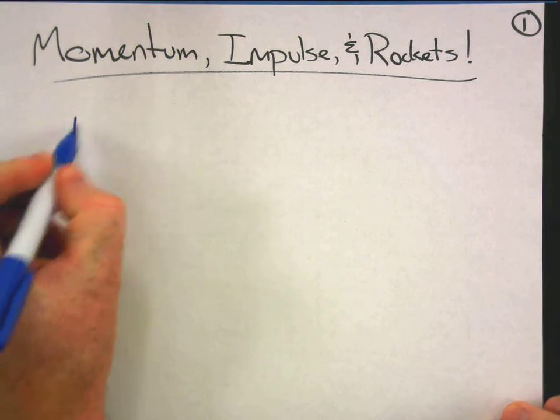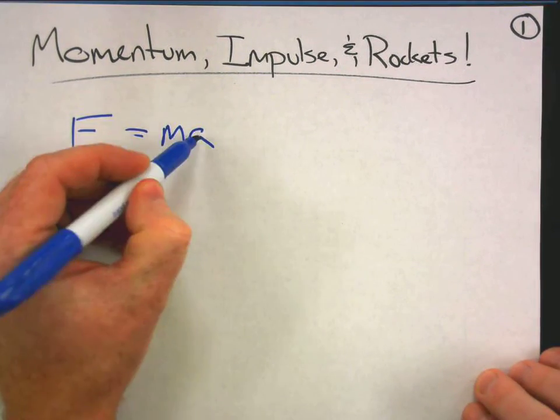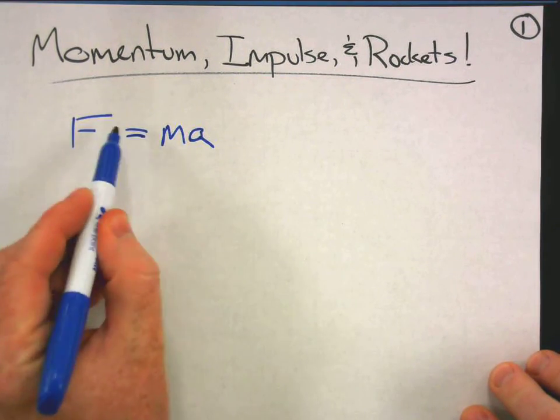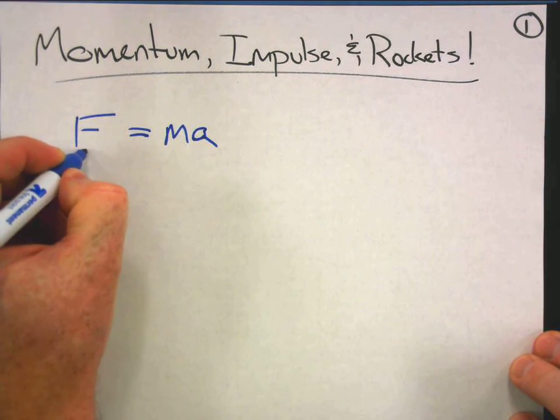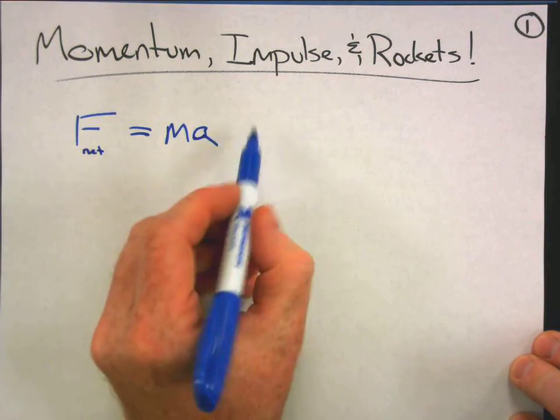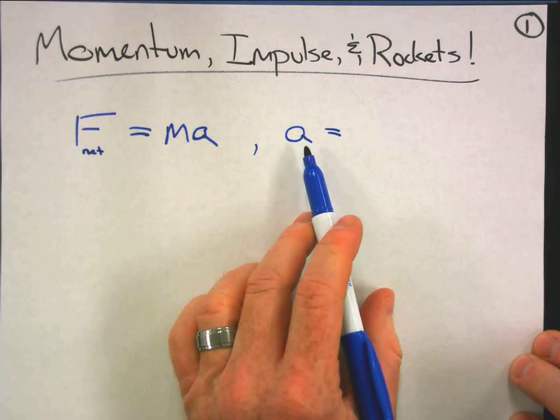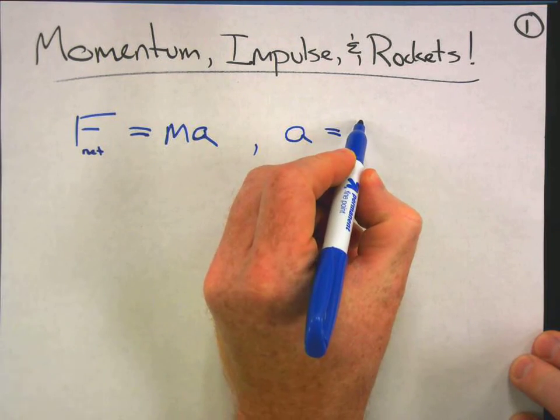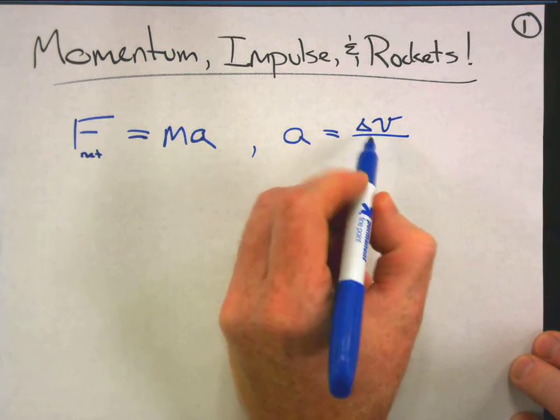So I want to take you back to something familiar. You recognize this? One of the most important equations in all of physics, Newton's second law: force equals mass times acceleration. And yes, really this should be the net force, but okay. Also regarding acceleration, you know that acceleration is the rate of change of velocity, so we have a change in velocity over a time interval.